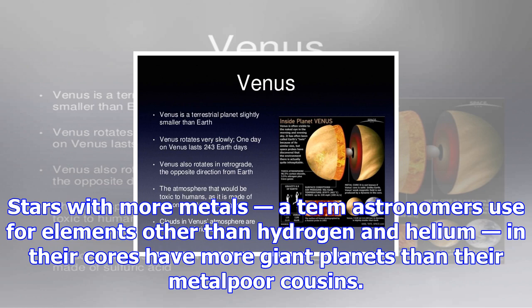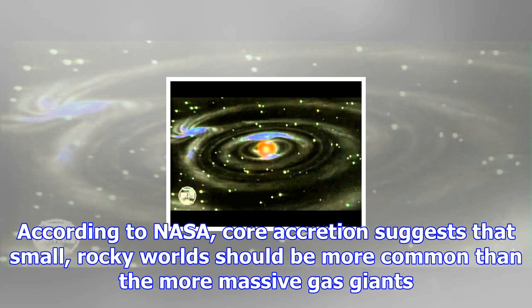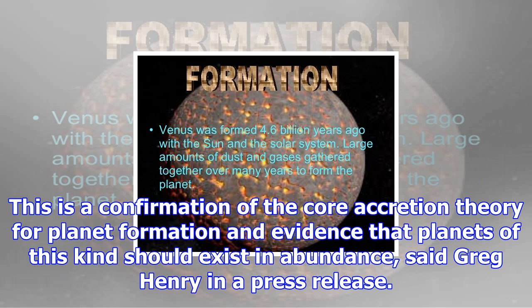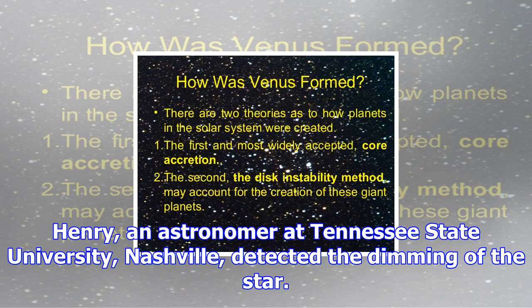Exoplanet observations seem to confirm core accretion as the dominant formation process. Stars with more metals — a term astronomers use for elements other than hydrogen and helium — in their cores have more giant planets than their metal-poor cousins. According to NASA, core accretion suggests that small, rocky worlds should be more common than the more massive gas giants. The 2005 discovery of a giant planet with a massive core orbiting the Sun-like star HD 149026 is an example of an exoplanet that helped strengthen the case for core accretion.